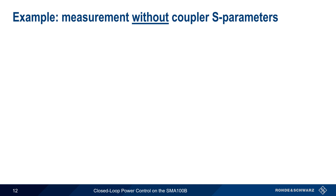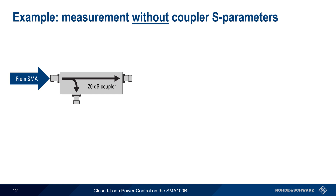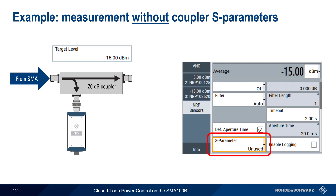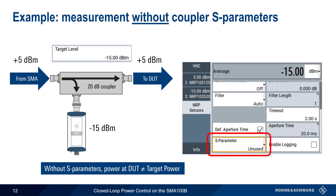Let's walk through a few examples. For simplicity, we'll assume that the SMA is directly connected to the coupler input — remember that in most cases there would be some variable gain or attenuation between the SMA and the coupler. Our power sensor is attached to the coupled port. Since here we're using a 20 dB coupler, the level at the power sensor will be 20 dB less than the level at the coupler input. If we set the target level to minus 15 dBm but do not specify the use of an S-parameter file, the sensor would read the target level of minus 15 dBm when the SMA output power is plus 5 dBm, and thus the power at the DUT would also be plus 5 dBm, assuming a coupler with typically low mainline loss. So in the case where S-parameters are not used, the power at the DUT input will not be the same as the user-configured target power.